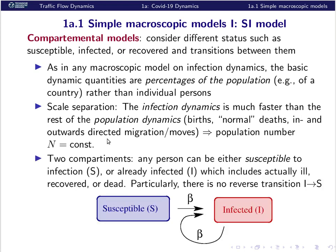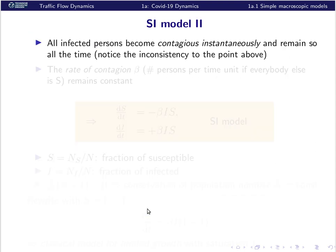Specific to this model, the mechanism is simple. The susceptible people get infected, and the infection rate is proportional to the number already infected. If the number of infections doubles, then the rate of new infections doubles too. So the rate of new infections is a product of the already infected and the fraction of susceptible ones.